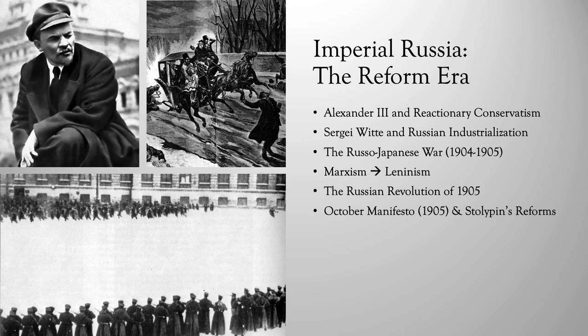This anti-Semitism would continue under Nicholas II in a series of pogroms from 1903 to 1906, where thousands more Jews were killed and millions emigrated. If you've ever seen the show or the movie Fiddler on the Roof, where a Jewish family has to flee their Russian village, this is the historical context for that story.